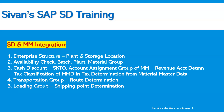In the same way, in the sales general plant view, there is a transportation group, which is one of the key factors in determining the route determination. Loading group — we all know that it is one of the key factors in determining the shipping point determination.